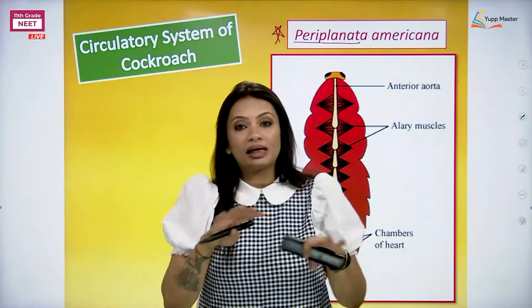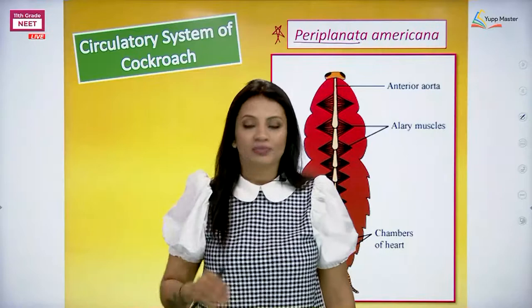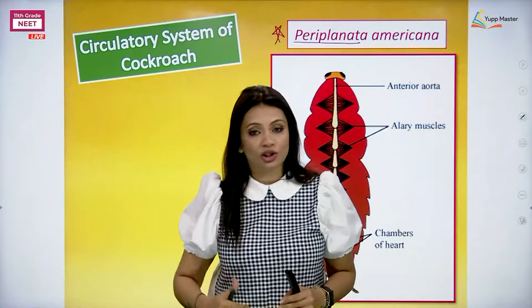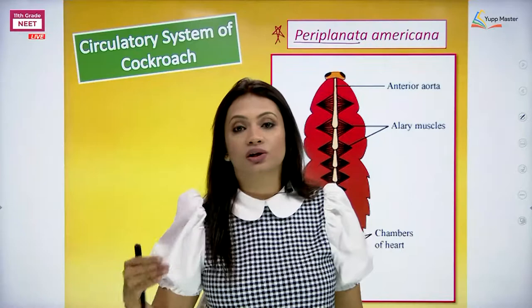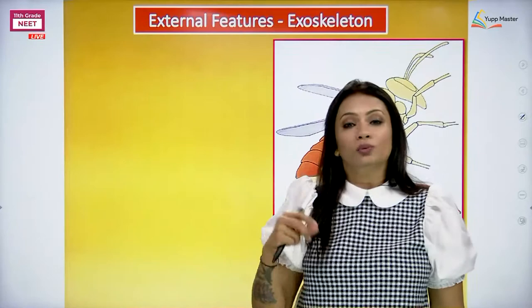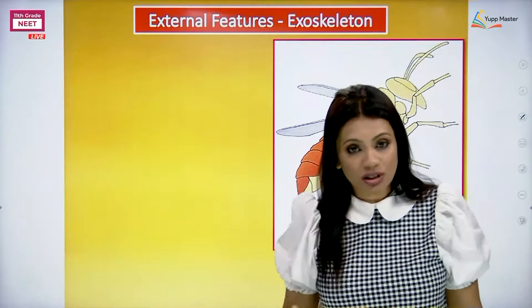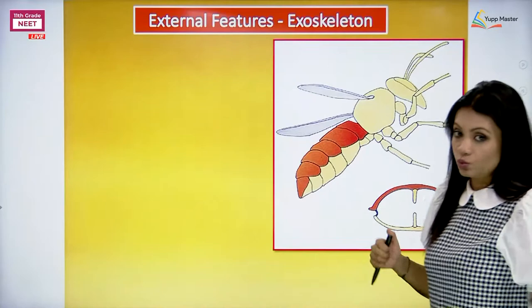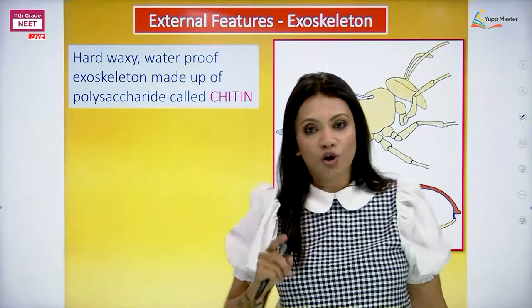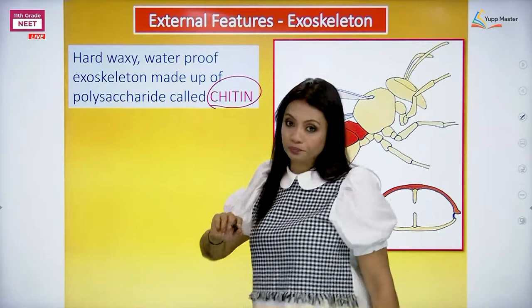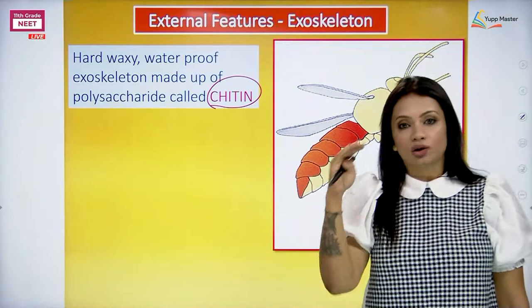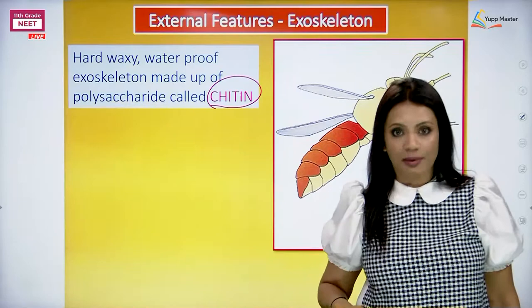Remember it is an open type of circulatory system. Before we go into that, you also need to know that the whole body cavity is going to be divided into certain regions. Before we get into that, let us revise the exoskeletons of the cockroach so that when their terminologies are used, they become a little bit easier. Remember the exoskeleton of this cockroach was made up of a polysaccharide called chitin. That chitin layer on the dorsal surface is given a different name, on the ventral surface a different name, and even for the lateral surfaces.